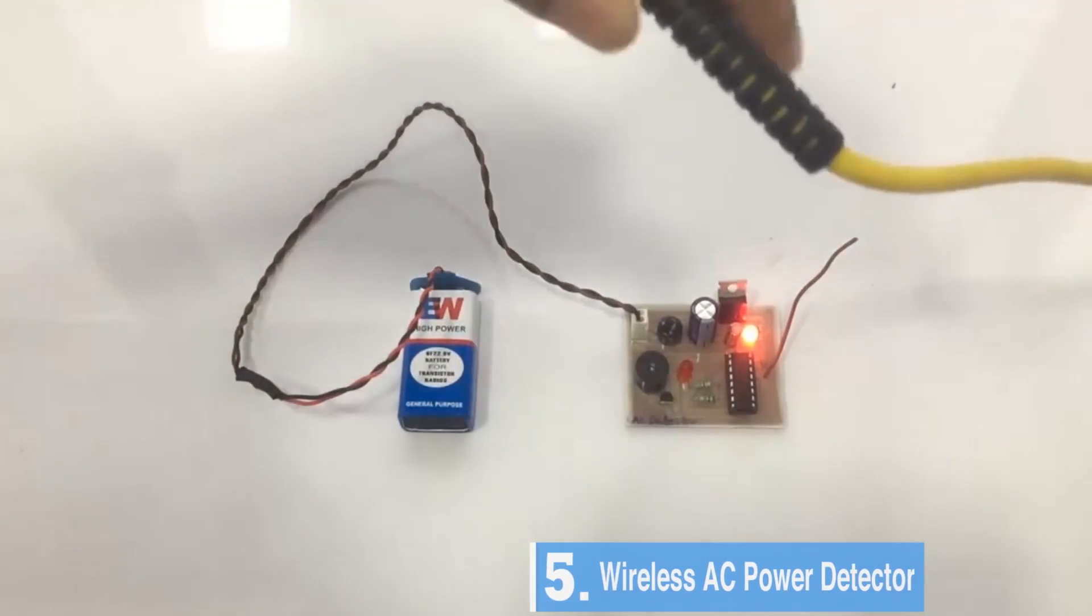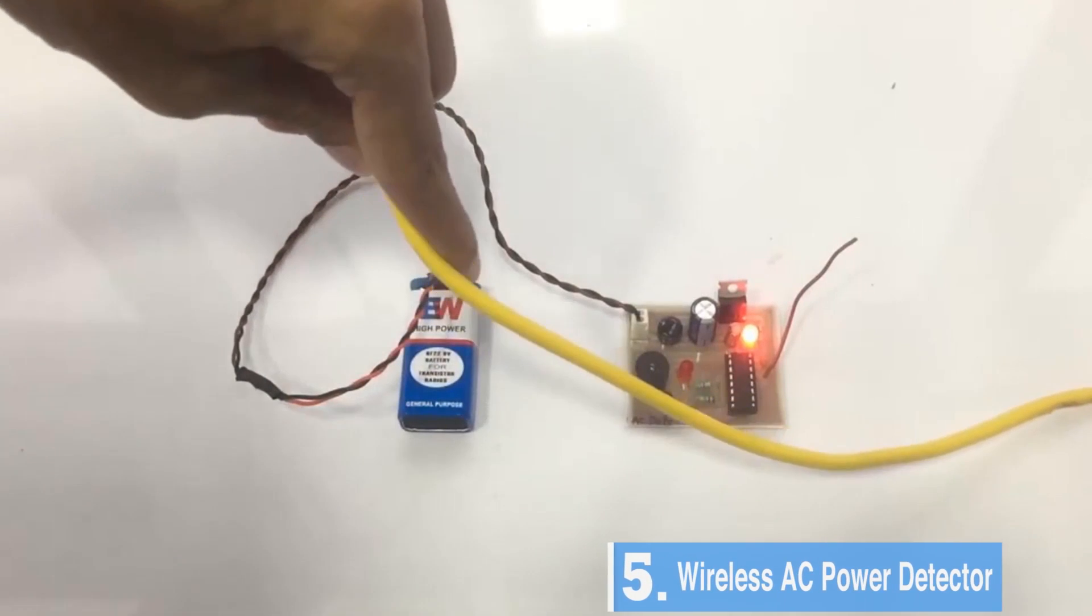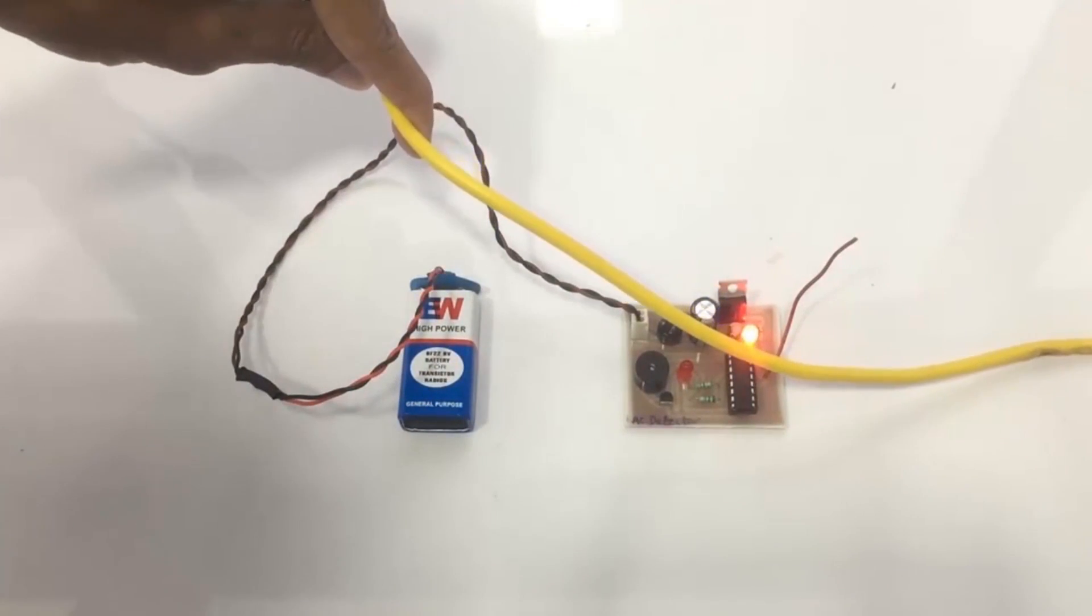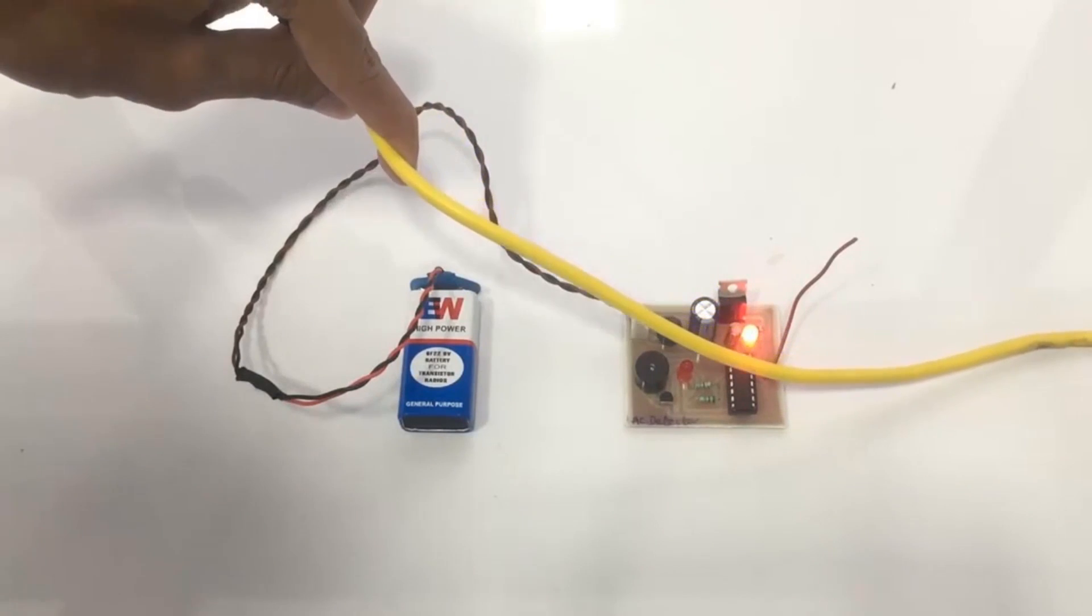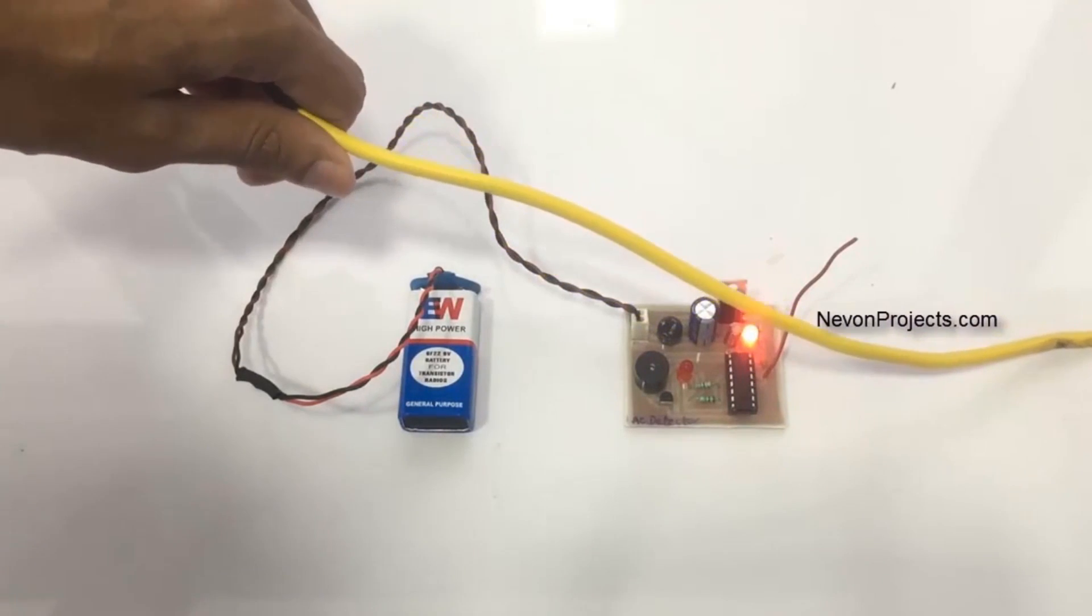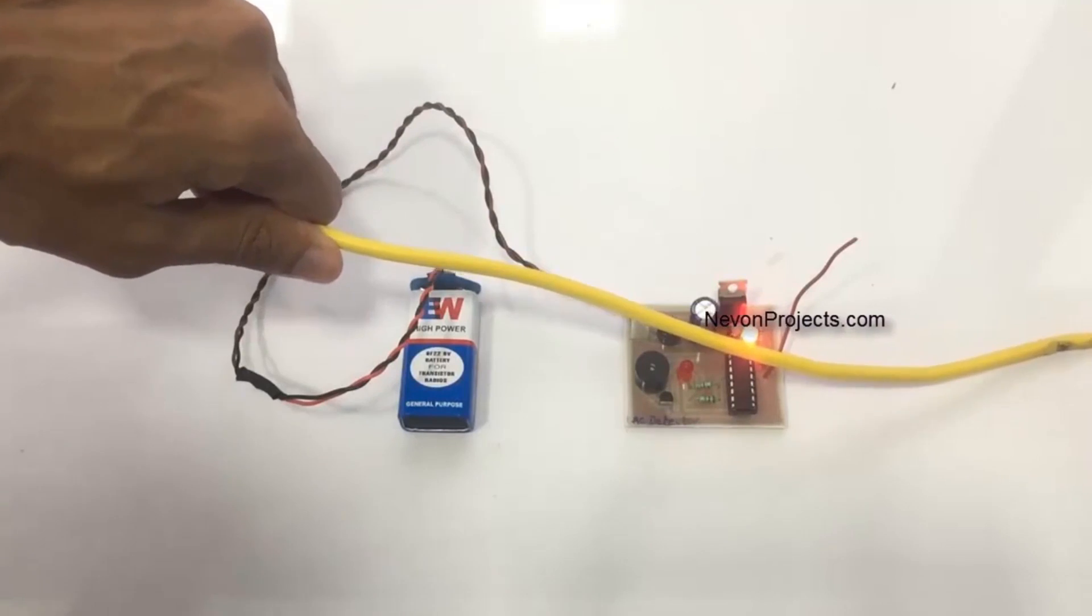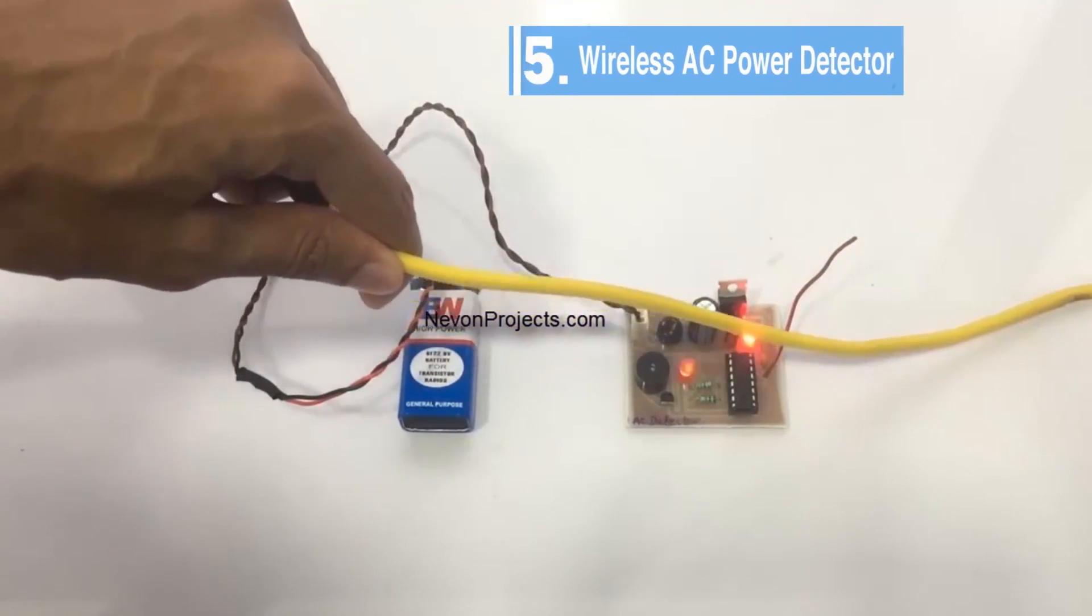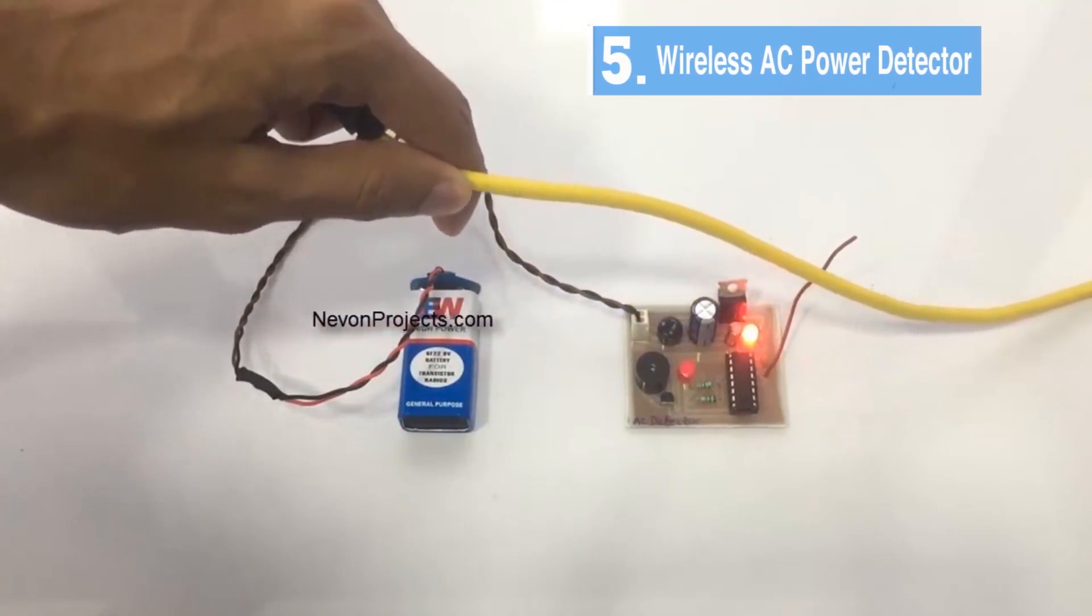Let's first bring a non-active wire with no current flowing through it close to this, and as you can see it does not detect any current here because we have switched it off. So now let's switch it on, and as you can see if we bring a live wire close to the circuit it starts beeping.